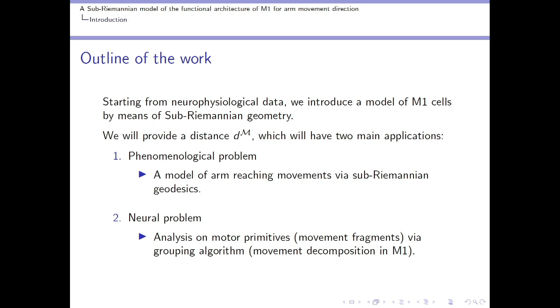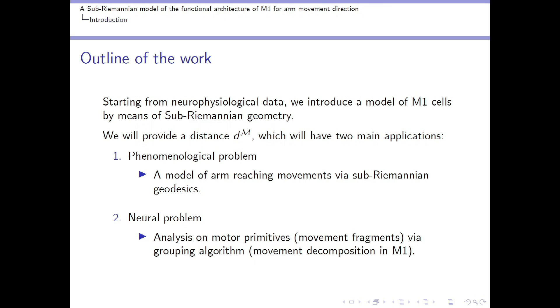I will show some neurophysiological data from which we will introduce a model of primary motor cortical cells by means of sub-Riemannian geometry. Here our main contribution consists of defining a distance in this space which will be applied to solve an open question arising in a neurophysiological paper. More specifically, we will provide an analysis on motor primitives, also called movement fragments, through a grouping algorithm based on our distance.